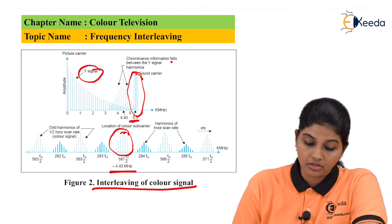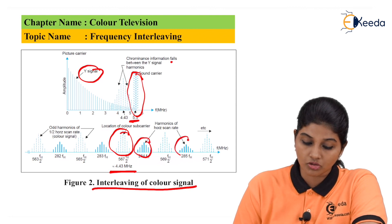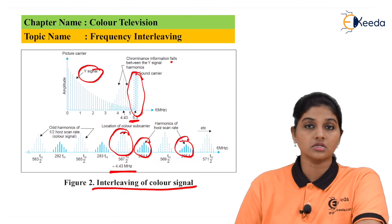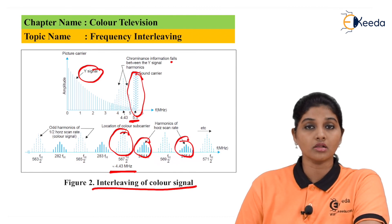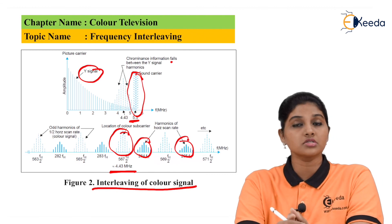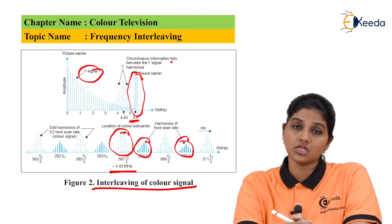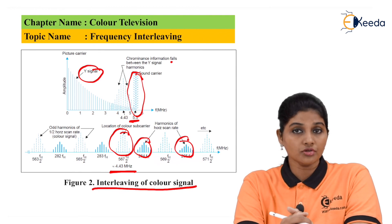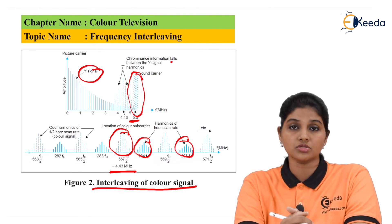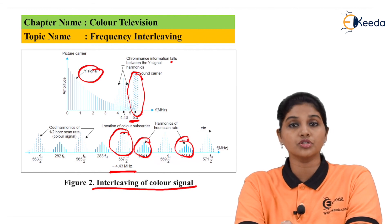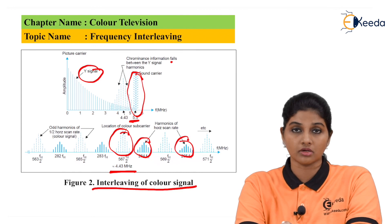Here we can see the harmonics of the horizontal scan rate. This is how the interleaving of the color signal takes place during transmission from transmitter to receiver. Frequency interleaving is possible because of the relationship between the video signal and the scanning frequencies which produce the video signal. Thank you very much for watching. Stay tuned and subscribe to Ekeera.